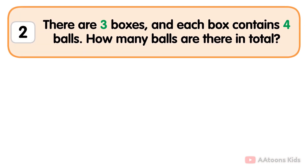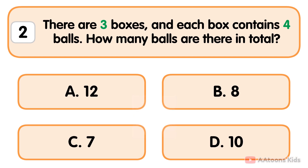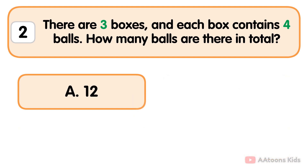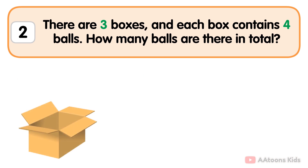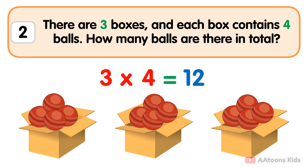There are three boxes and each box contains four balls. How many balls are there in total? Twelve. There are three boxes and each box has four balls. Simply multiply the number of boxes by the number of balls in each box. The number of boxes is three and the number of balls in each box is four, so three multiplied by four is twelve. The total number of balls is twelve.